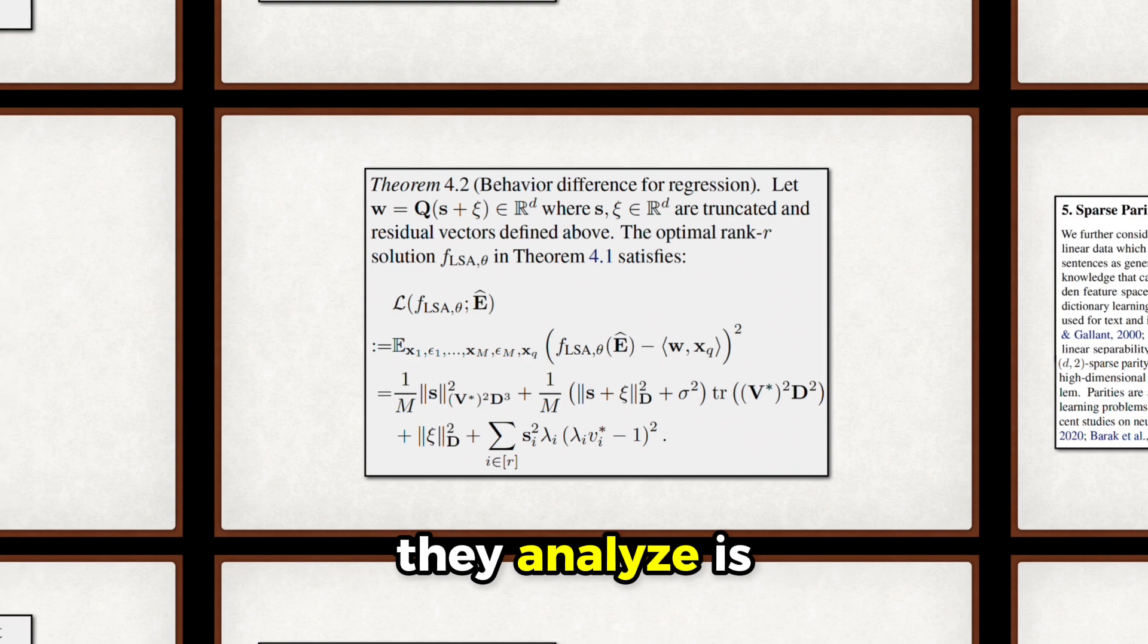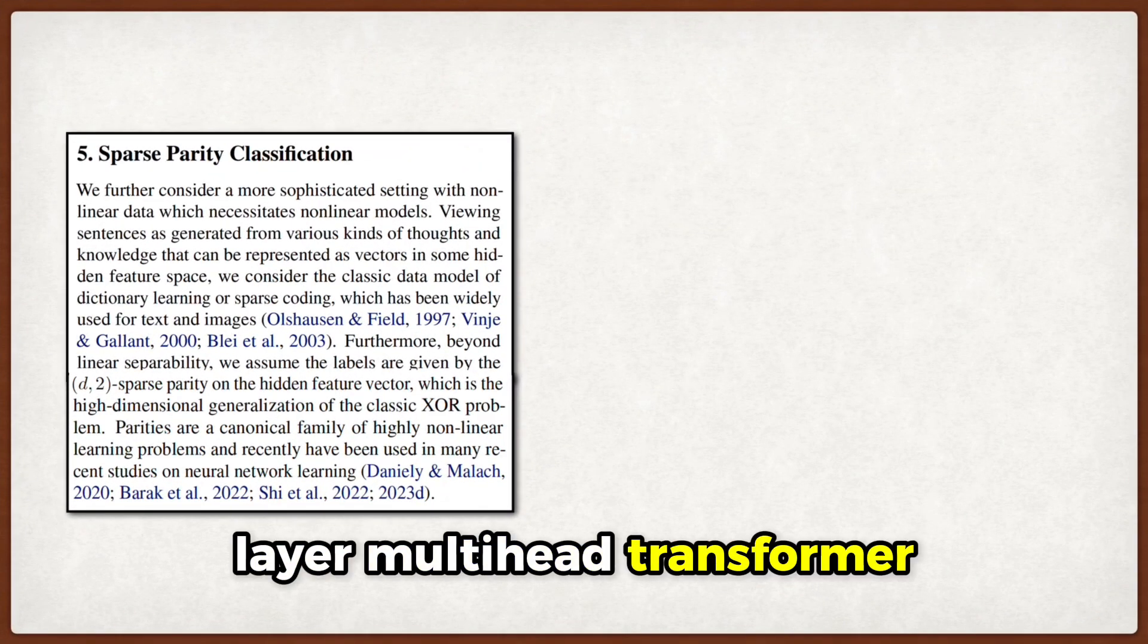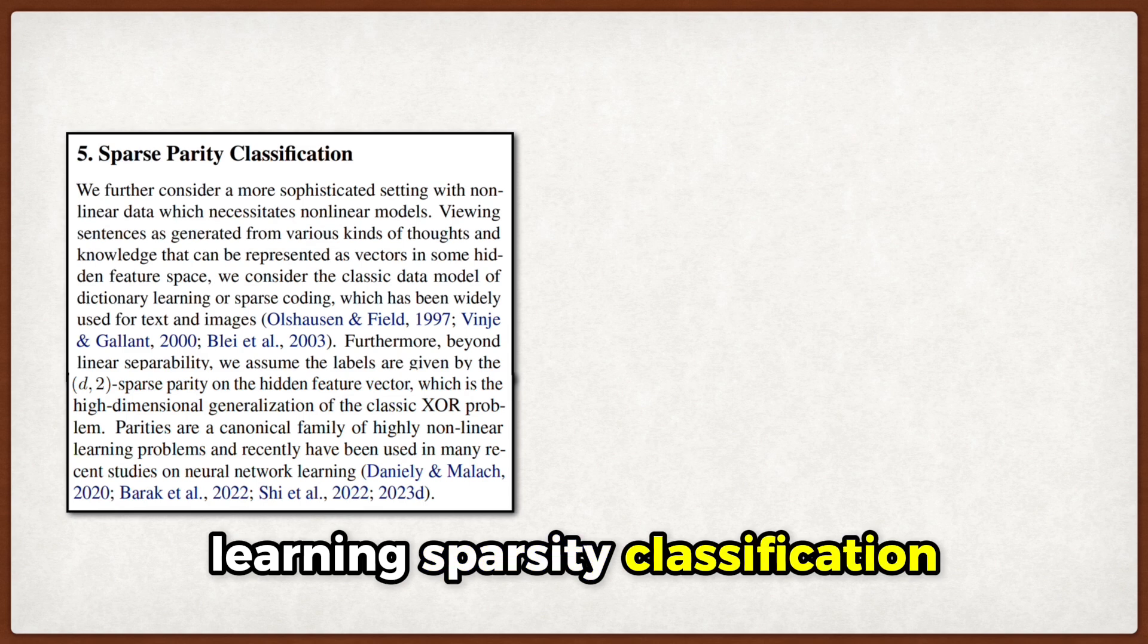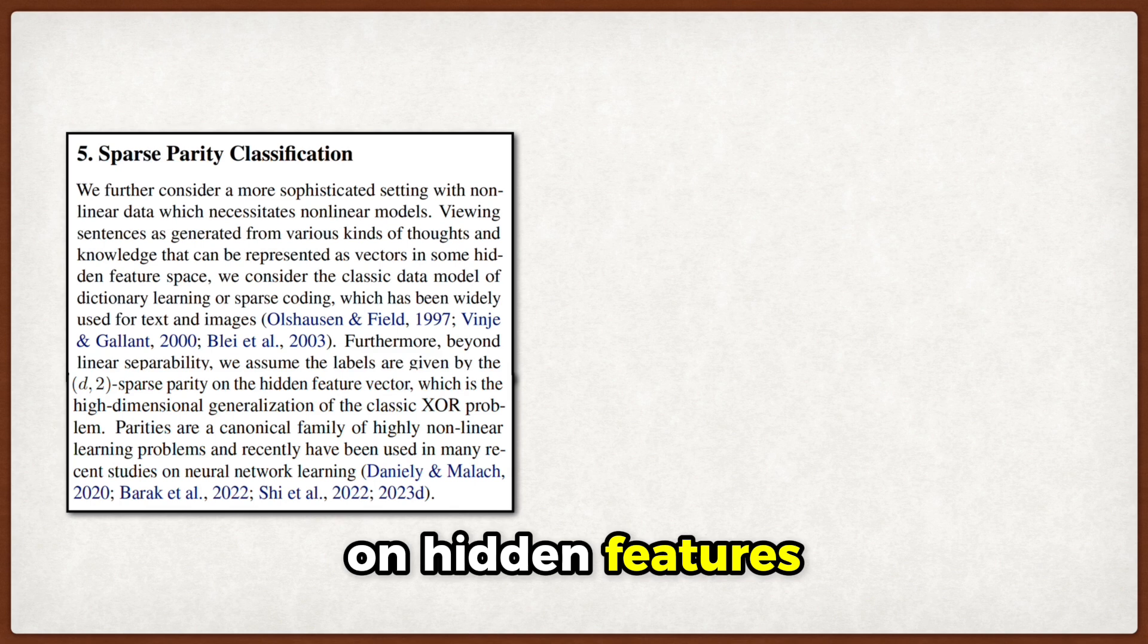The second setting they analyze is even more complex. It's a two-layer multi-head transformer learning sparse parity classification task, which is basically like learning XOR operations on hidden features. Here they measure model scale by the number of attention heads M.